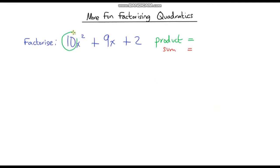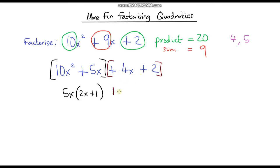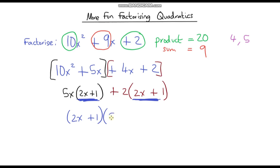For this one we need two numbers with a product of positive 20 and a sum of positive 9 — those are 4 and 5. Rewriting the expression and focusing on the first part, we can factor out a 5x, leaving 2x plus 1. Then factoring out a positive 2 from the second part also leaves 2x plus 1. Factoring out 2x plus 1, we're left with 5x plus 2.